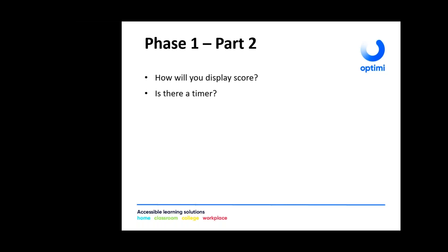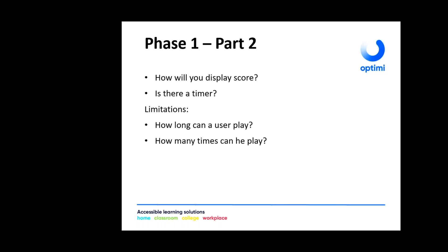Do you have a timer? What are you going to time and how are you going to time it? How long can the user play? How many times can they play? You might give them three lives, five lives, ten lives, or an infinite number — though just going on indefinitely is not really helpful for your program. You need to decide how many times and how long.